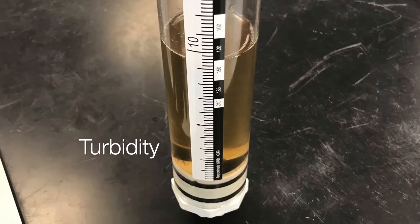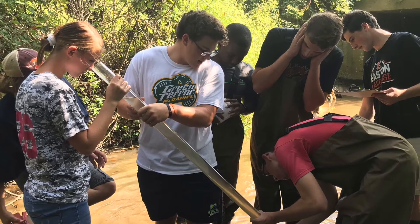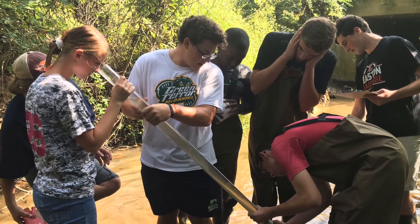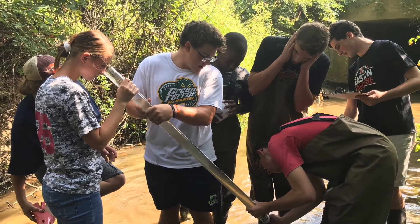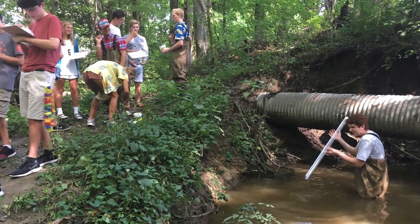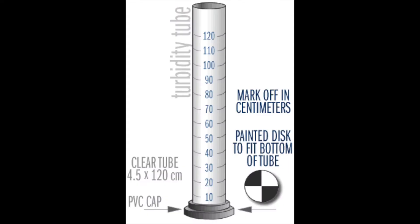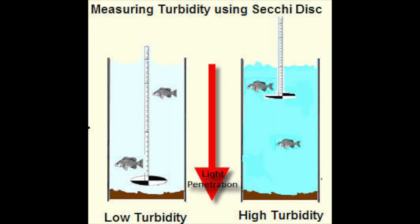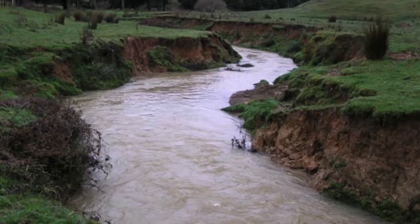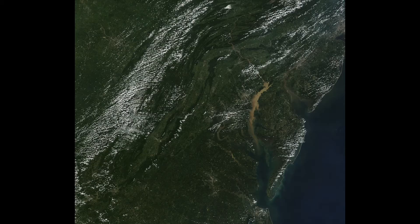Turbidity measures the cloudiness of the water system. The cloudier the water is, the harder it is for sunlight to reach the bottom of the body of water, and therefore limits photosynthesis rates. We measure turbidity using a Secchi disk, or a tube, depending on the depth of the body of water. Erosion is a large contributor to high turbidity levels in all bodies of water, even here in the Chesapeake Bay.